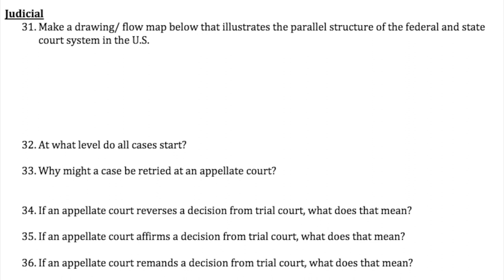All cases start at trial courts. Number 32: if you want to appeal, you probably didn't like the outcome. In a criminal trial, defendants can appeal all the way up until found innocent — then they're left alone because of double jeopardy. In a civil trial, whoever loses can appeal to the next level. Number 34: if an appellate court reverses a decision from a trial court, that means the lower court's decision is overturned. Number 35 — affirms — means they uphold the lower court's decision. And a remand means they send the case back to the lower court to be re-heard — like a re-trial.